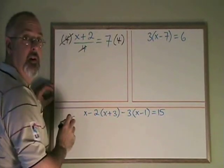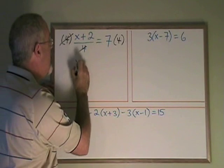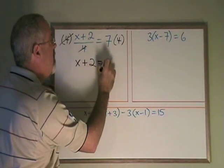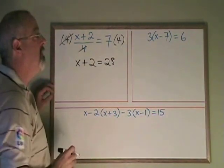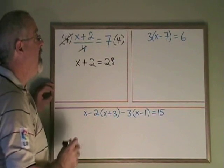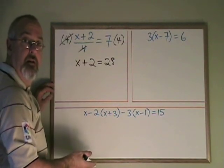These cancel, and all that's left on the left side is the x plus 2, which is equal to 28. Now we can go back to the regular skills that we know.